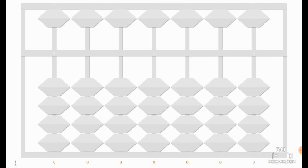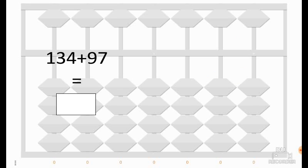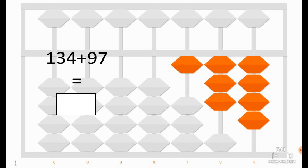The second example: we would like to add 134 plus 97. Like we did in the last example, we write the first number on the soroban. The first number is 134. To add 97, firstly we add 90 and secondly we add 7.